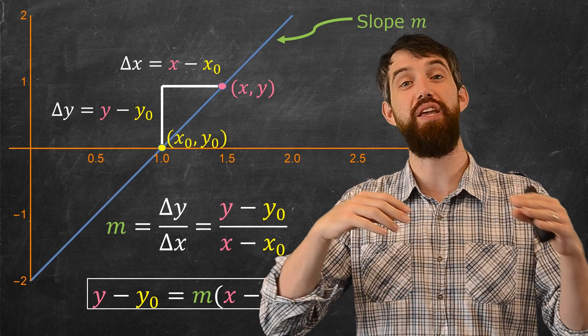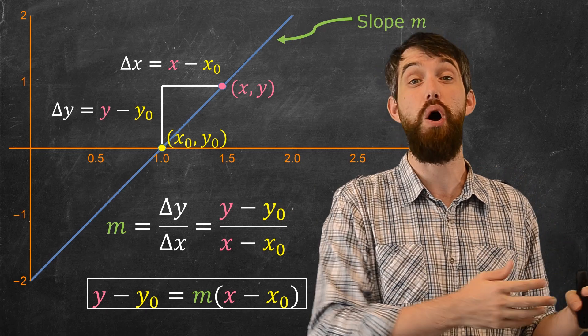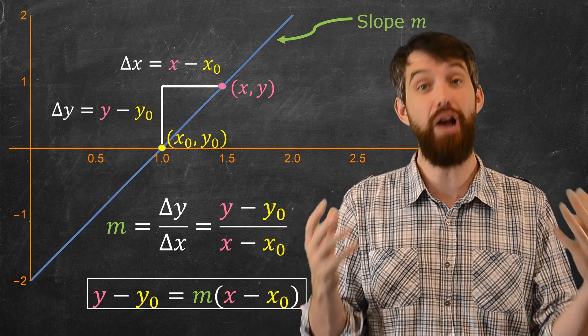And there is the point-slope equation of a line. So, the lesson is that as long as you know the m, the slope, and as long as you know some point on the line, the x₀, y₀, you can just plug them into this particular equation. By the way, some of you may have seen the equation y equals mx plus b, the so-called slope-intercept equation of a line.